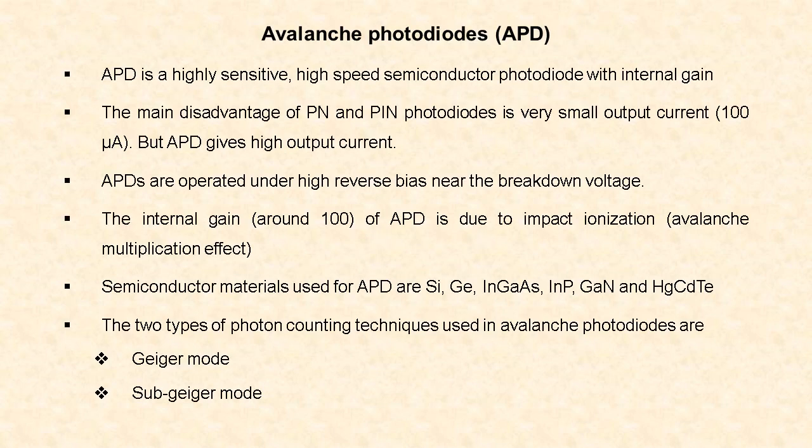In this video, we are going to see about avalanche photodiodes. Avalanche photodiode is a highly sensitive, high-speed semiconductor photodiode with internal gain. The major disadvantage of PIN photodiodes is that each photon generates only one pair of electron and hole, and there is no internal gain. Hence, the output current is small, about 100 microamps. If you amplify the output current after the detector stage, it introduces significant noise in the circuit. Hence, we go for avalanche photodiode which has internal gain.